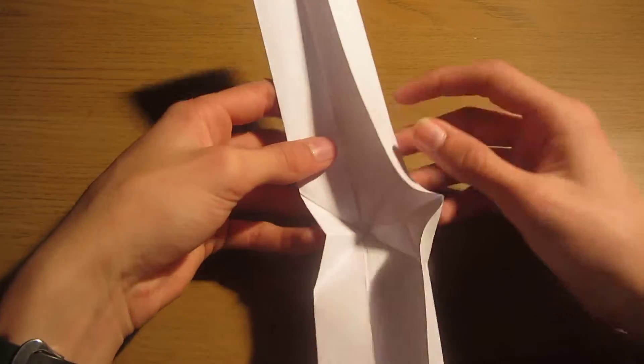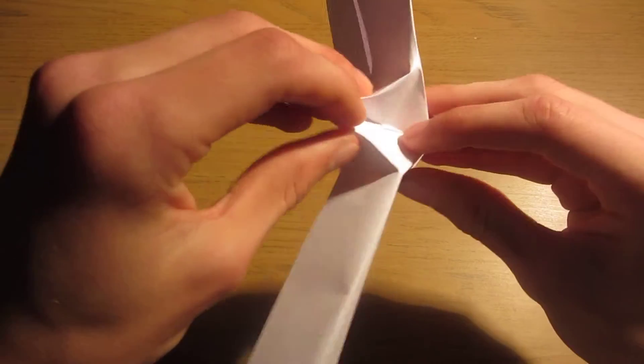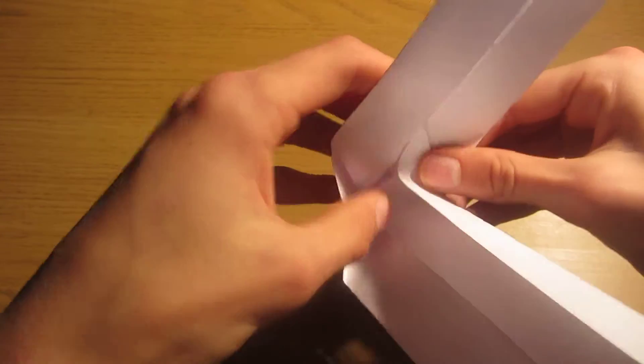We're just going to turn it over and close this flap here. And also close this square at the same time. Just like this. And then we're going to fold this flap up to this line. Like this.